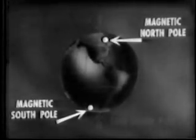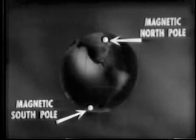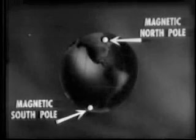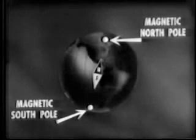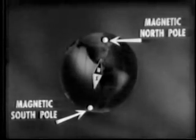All navigational maps with their lines of latitude and longitude are based on the geographical or true north and south poles. However, the Earth itself is a great magnet, having magnetic north and south poles which do not coincide with the true poles, and whose positions vary from year to year. When a magnetized bar or needle is freely suspended, one end will point toward the magnetic north pole. This invariable action is the basis of the magnetic compass.